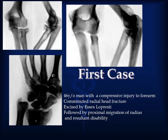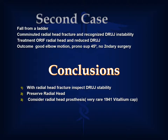The first case was that of a 46-year-old patient who sustained a compressive injury to his forearm. Essex-Lepresti excised the comminuted radial head fracture and noted the rapid proximal migration of the radius with resultant disability at both the wrist and elbow. His second case described a similar axial load injury from a fall from a ladder. This patient sustained a comminuted radial head fracture and recognized distal radial ulnar joint instability. Given the poor outcomes of his first case, Essex-Lepresti decided to treat the radial head with open reduction internal fixation and closed reduction of the distal radial ulnar joint. At one year, the outcome showed good elbow motion, a pronation-supination arc of 45 degrees, and no secondary surgery required.